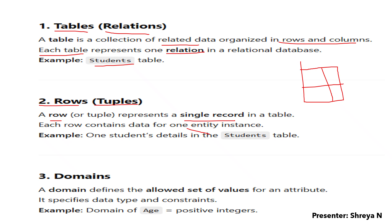One student's details in the student table — for example, roll number 1 and a student's name — that one record of a student is what we call a tuple.